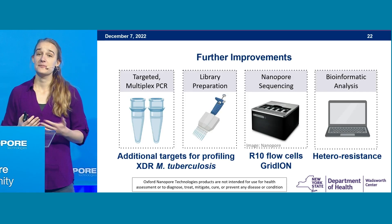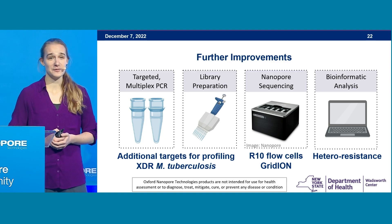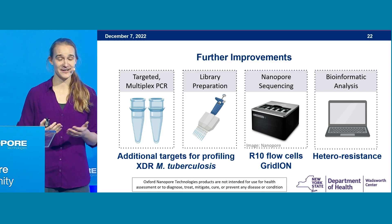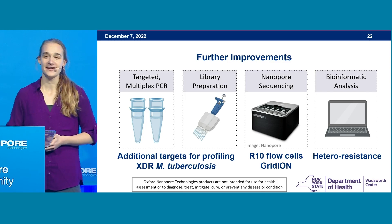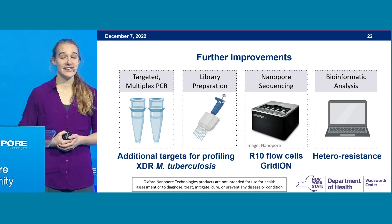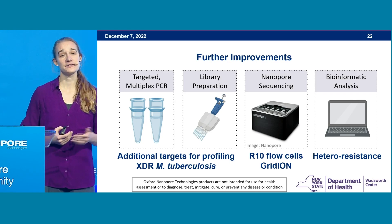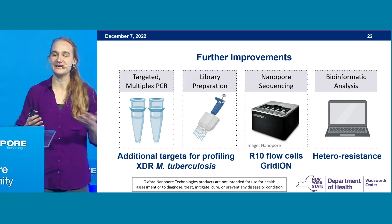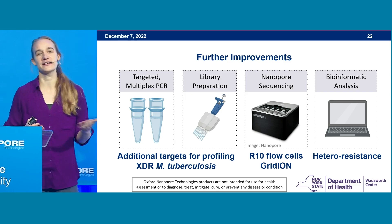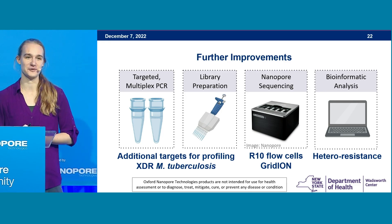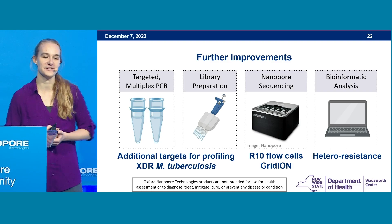Our next step is to submit this to New York State's Clinical Laboratory Evaluation Program, and we're looking to implement it in the coming year. We'd like to add additional targets so that we can profile extensively drug-resistant TB — though this is, pun intended, a moving target, because we don't yet know all of the mutations that confer resistance, and it's still very much an emerging field.